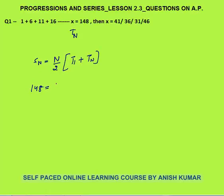Sum of first n terms is 148. We have n by 2, first term is 1, and the last term is x. Cross multiply: 148 into 2 is 296. So this is n into (1 plus x).